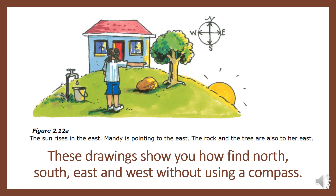Now we're going to have a look at how we can find our direction without using a compass. On the slide in front of you, I've given you a drawing with a young girl called Mandy. In this drawing, Mandy is facing the house, and on her right hand side the sun is rising. The sun always rises in the east — the rock and the tree are also in the east.